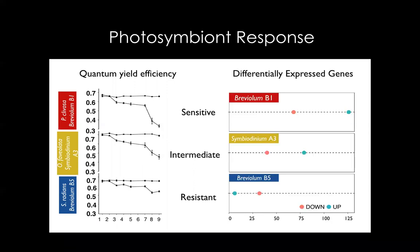When we look at the transcriptome data from the photosymbiont side of things and examine the differentially expressed genes, what we see is that in general Breviolum B1 has an increased transcriptome response relative to Breviolum B5, the more thermally resistant species, and there is a larger number of genes differentially expressed, most of them upregulated in Breviolum B1. Symbiodinium A3 shows the intermediate transcriptome phenotype that is linked to the intermediate physiological phenotype.